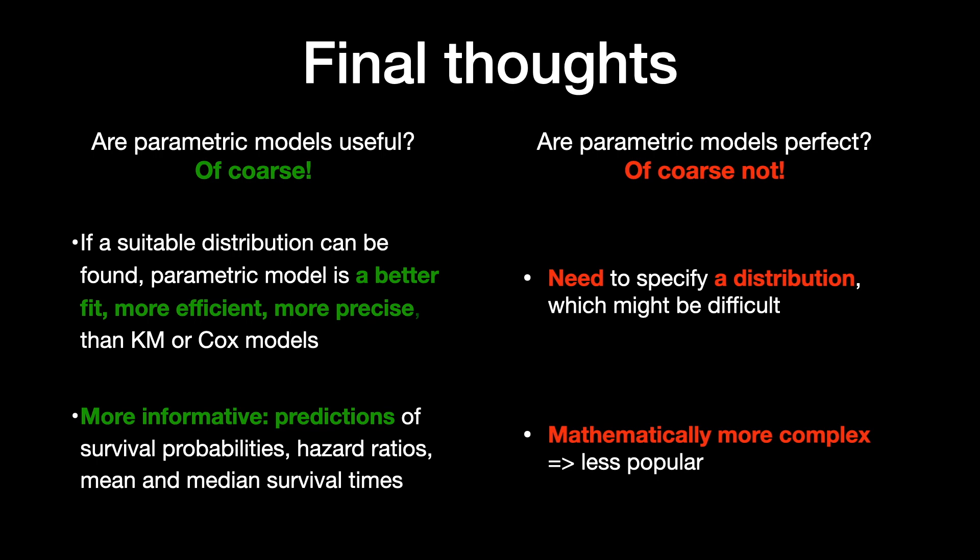Thus, despite the fact that parametric models are a good alternative to the Kaplan-Meier and Cox regression models, which both do not need to specify any distribution, Kaplan-Meier and Cox remain the most popular methods for analyzing survival data. And that is why the next logical step in your statistical journey would be learning about Cox proportional hazard models. For more details and computer code for Kaplan-Meier and exponential parametric models, check the link in the description below. And if you enjoyed this video and want to see more, feel free to like and subscribe. And as always, thanks for learning.